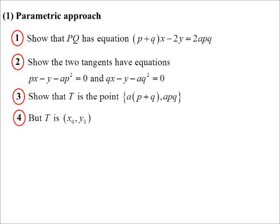Because I can say, oh, hang on a sec, I know T is the point X0, Y0, whatever those coordinates happen to be. So therefore, X0 must be A(P plus Q). Rearranging that, I can say, well, P plus Q is X0 on A. And I can say, well, Y0 is APQ.